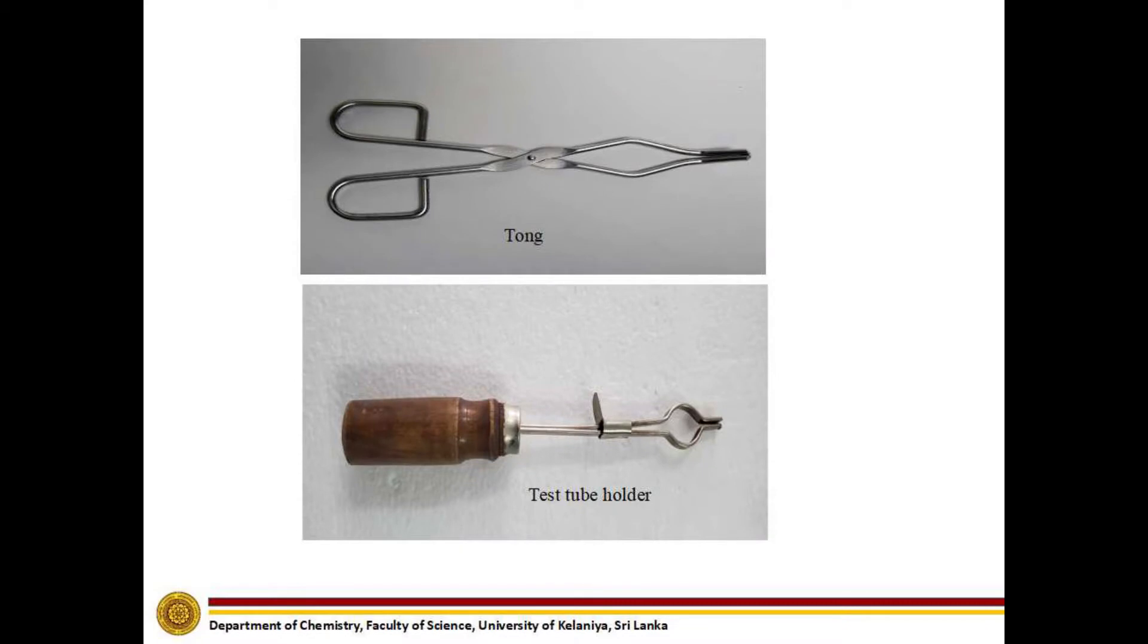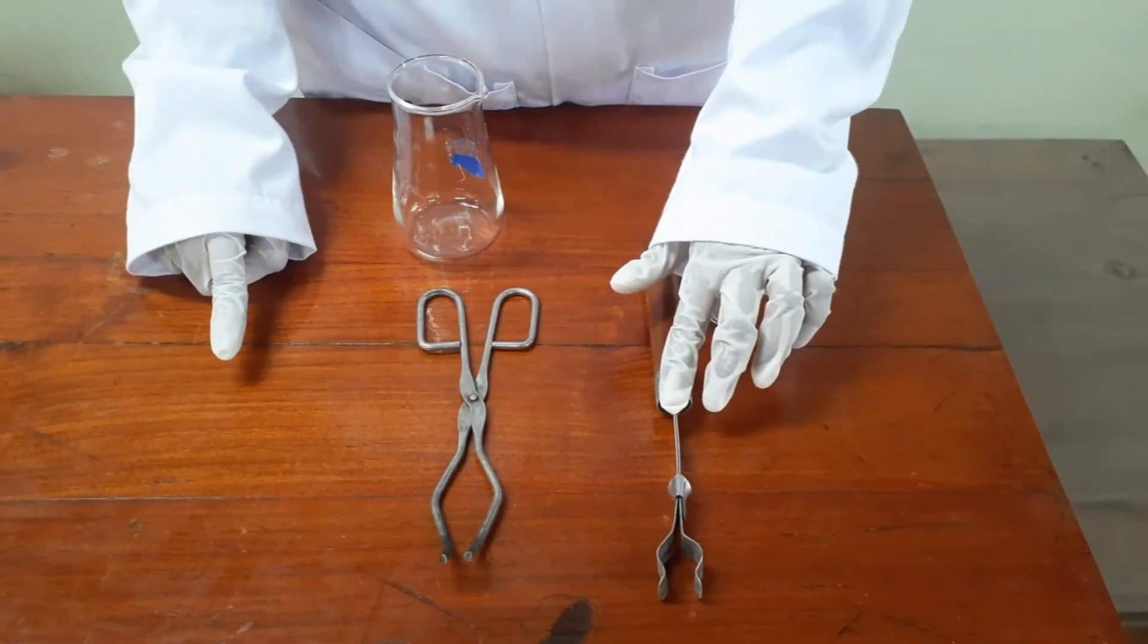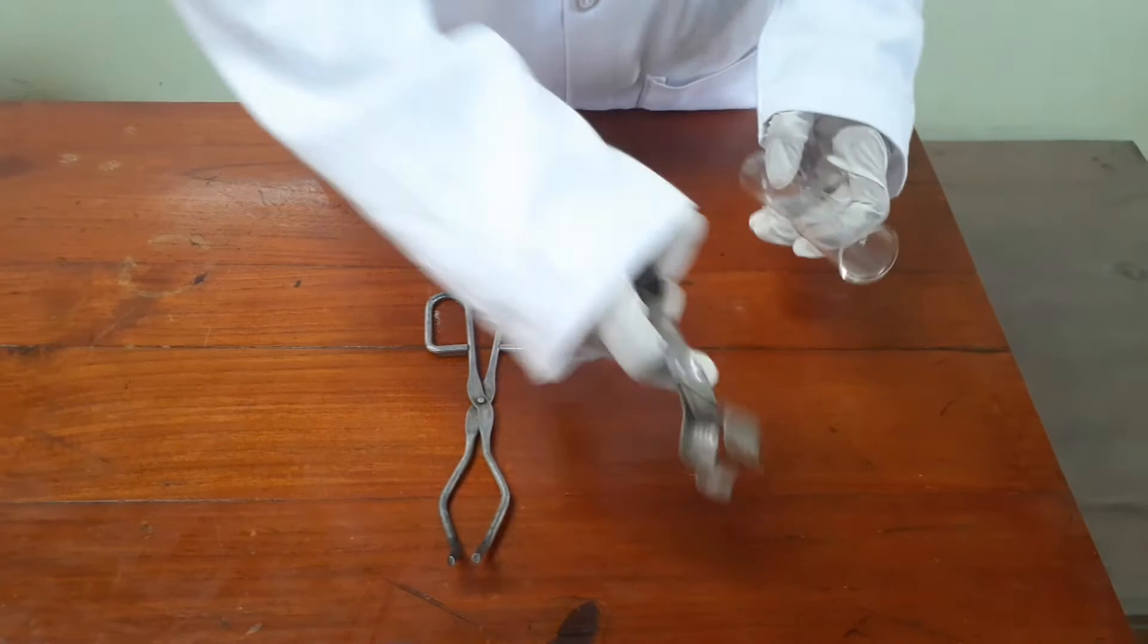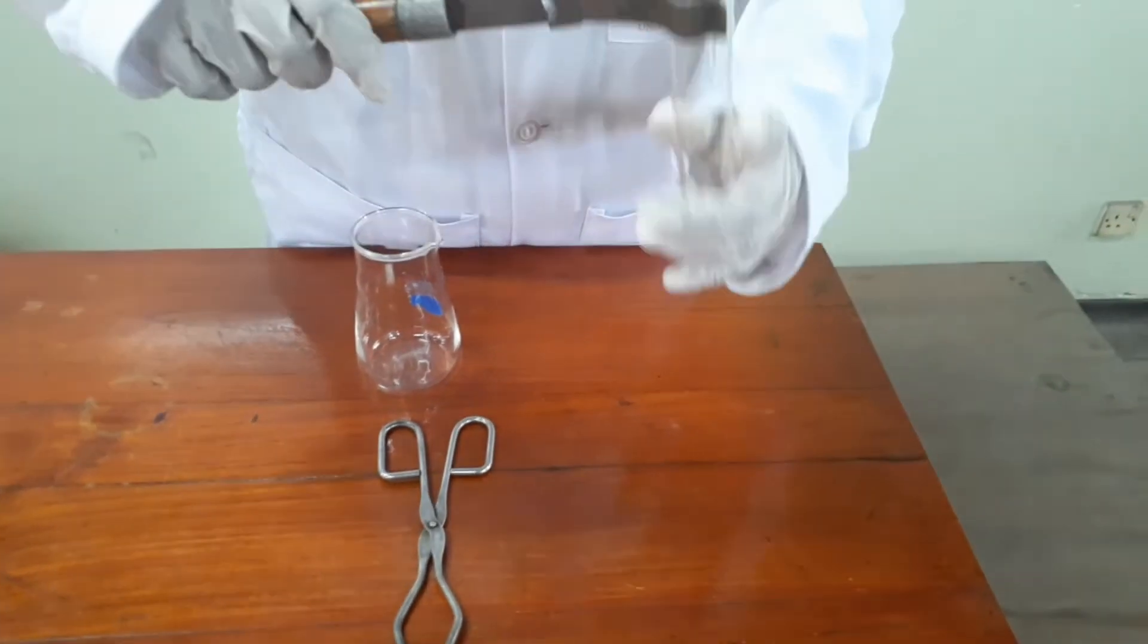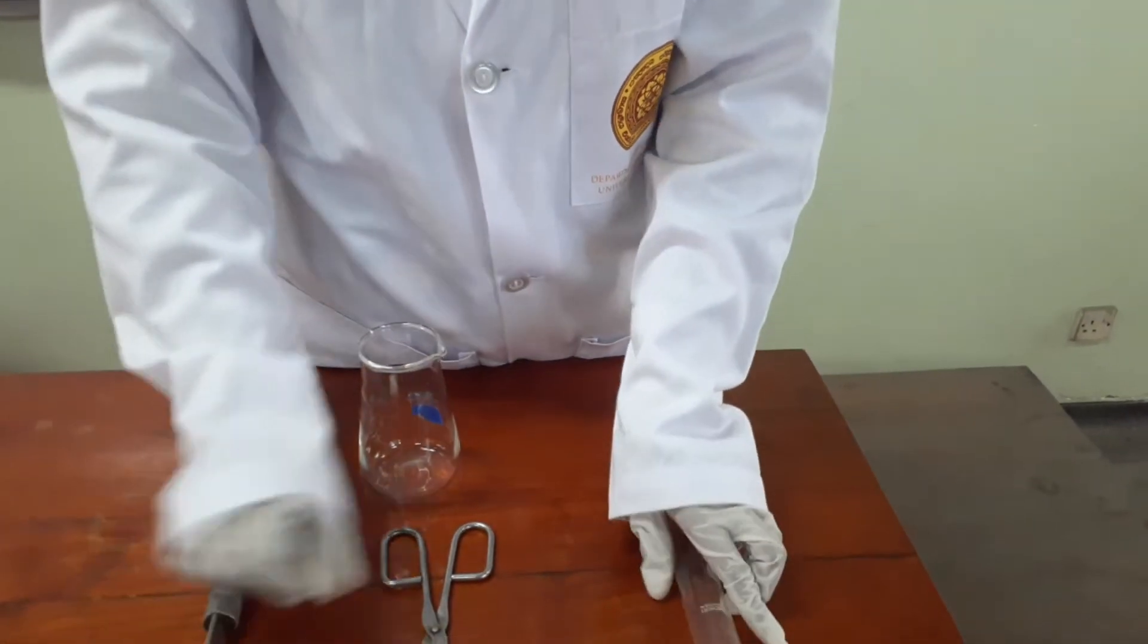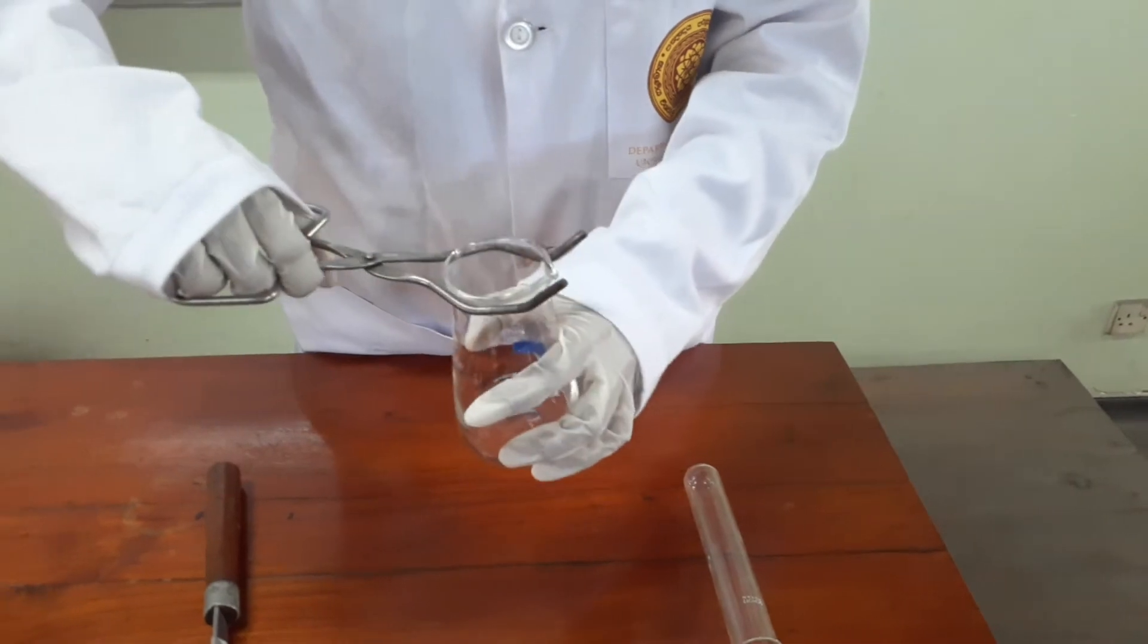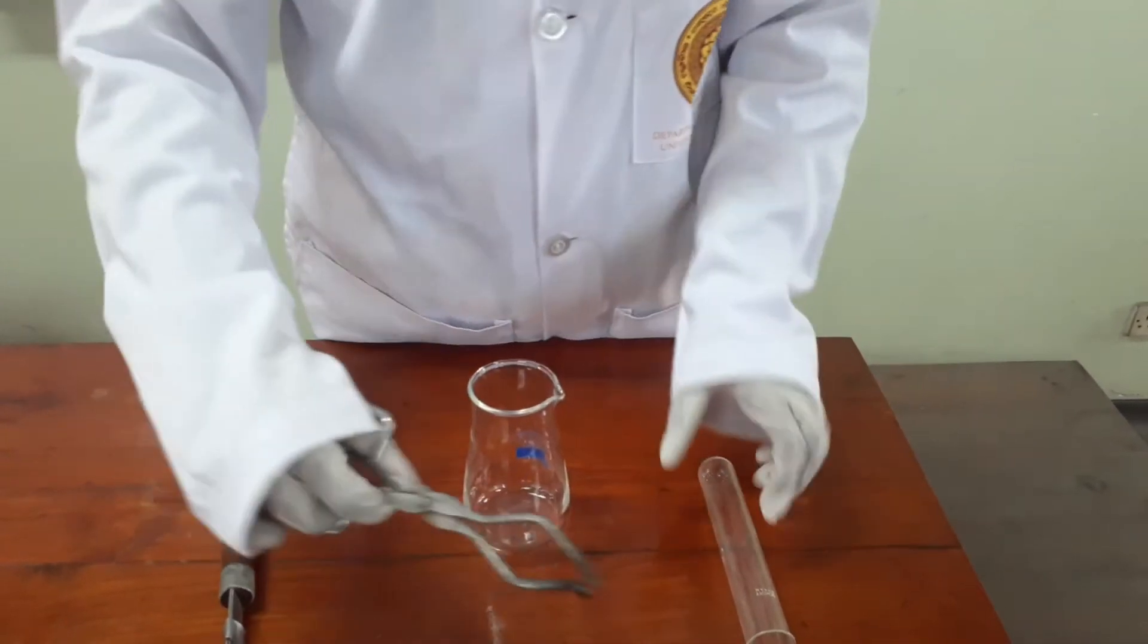Let's identify the difference between tongs and test tube holder. This is the tongs and this is the test tube holder. We use test tube holder to hold boiling tubes when we are heating a solution which is in a boiling tube. And we use tongs to hold a beaker when we are heating a solution in a beaker.